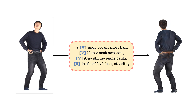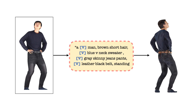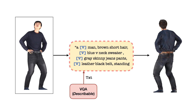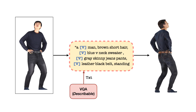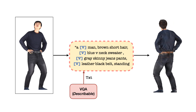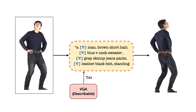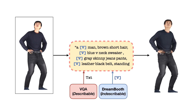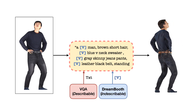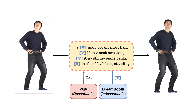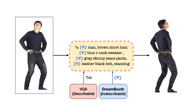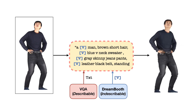TEC utilizes describable semantic prompts derived from an input image through a VQA model. Additionally, it incorporates a unique identity token obtained from DreamBooth to handle indescribable appearance. The combined use of these prompts aims at improving the realism of unseen regions.